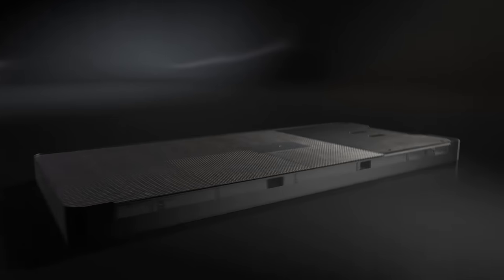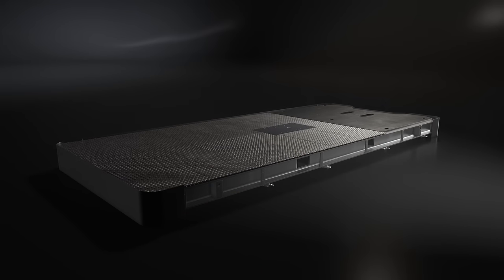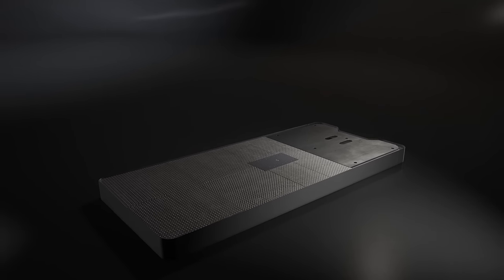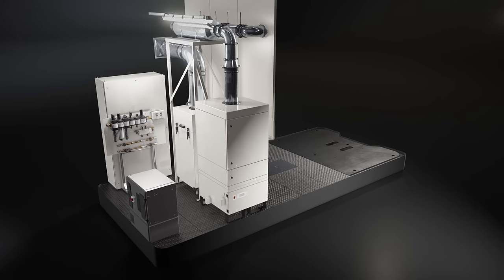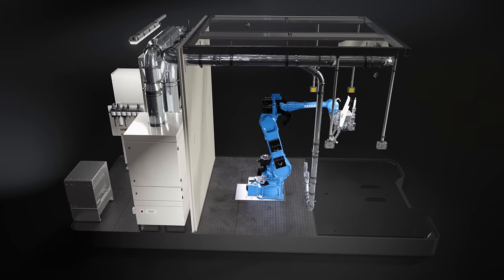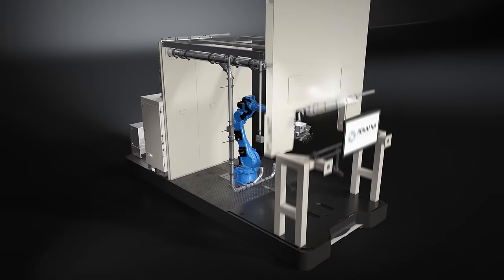The laser welding cell is transportable by means of forklift and consists of three separate areas: the dust-proof separated service cabin, the laser system, and the component feed system.